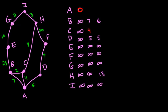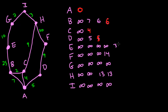We choose D with label 5. D's neighbor other than A is F, which had infinity, so F gets label 5+9=14. The others are unaffected: H stays at 13, E and G and I remain at infinity, B stays at 6. We choose B with label 6. B's neighbors C and A are already done. B affects E: label 6 plus edge 25 gives 31, which is an improvement over infinity. So E gets 31. H=13, F=14, G and I stay at infinity.